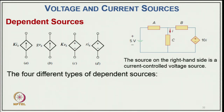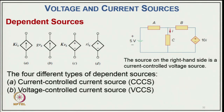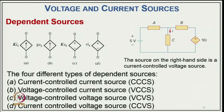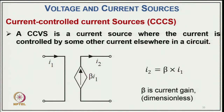The four dependent source types are: a current-controlled current source (CCCS) where current i₂ = β·i₁ (β is the current gain), a voltage-controlled current source (VCCS) where current i₂ = g_m·v₁ (g_m is the transconductance in Siemens), a voltage-controlled voltage source (VCVS) where v₂ = μ·v₁ (μ is the voltage gain), and a current-controlled voltage source (CCVS) where v₂ = R_m·i₁ (R_m is the transresistance). In each case, one circuit variable controls a source in another branch.